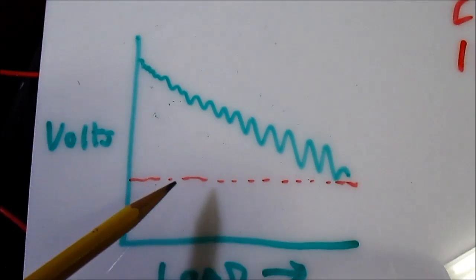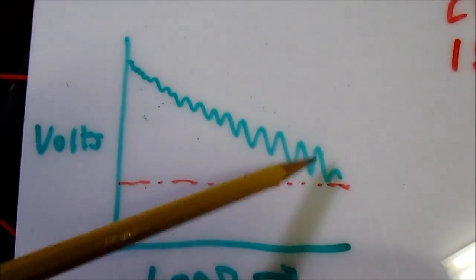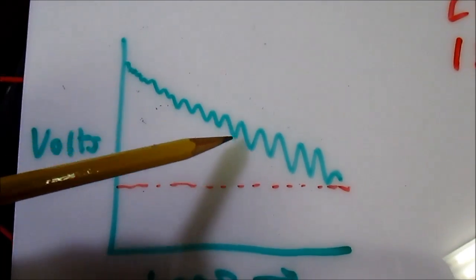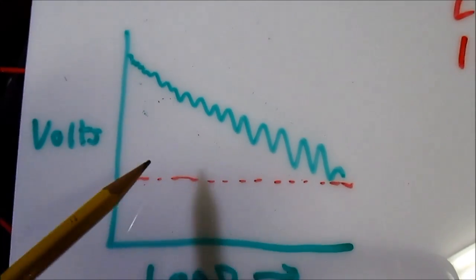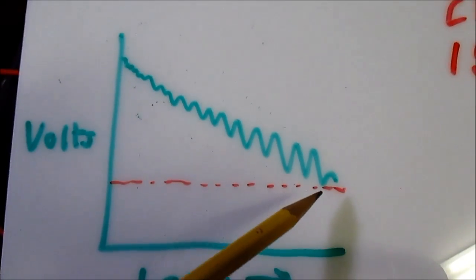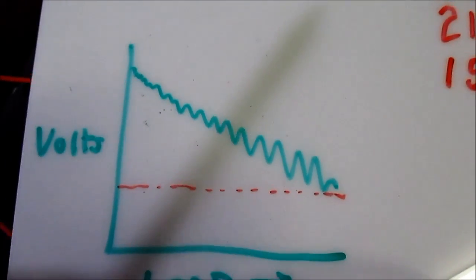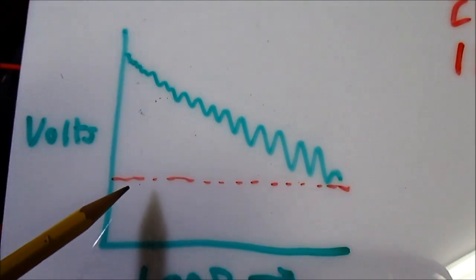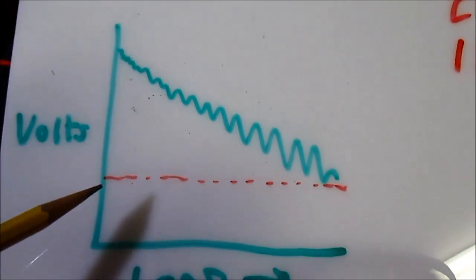And we want at the maximum load we don't want a regulator to run into the ripple. This is kind of the ripple. Now the ripple is kind of small and as you add load the ripple becomes larger. But you don't want your regulated output to have ripple on it. There is some voltage called the dropout voltage of the circuit. And you have to stay above that or you'll have ripple on your regulated output which you probably don't want.